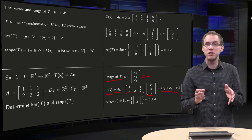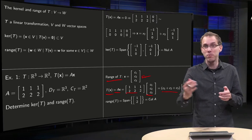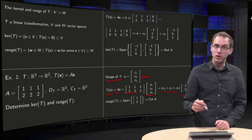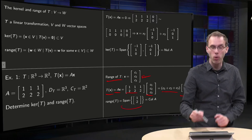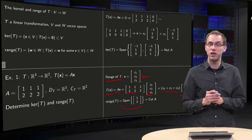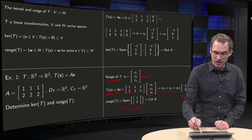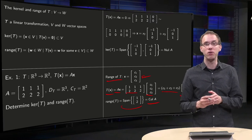So if you take an arbitrary vector in the domain, you always end up with some multiple of (1, 2). So the range of T, the vectors you can reach, are all linear combinations of (1, 2) in this case, or the span of (1, 2). And it is exactly the same as the column space of A, and holds in general of course.